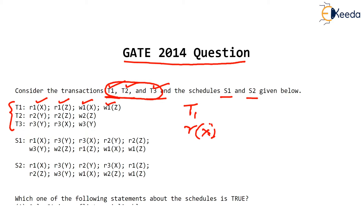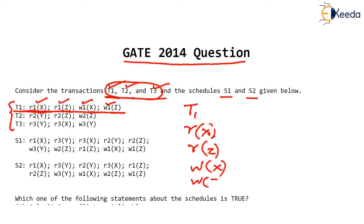The other operations after read X are read Z, write X, and write Z — all done by T1. Similar notation applies to T2 and T3. I'm not writing out those transactions fully, but you can now understand the notation.